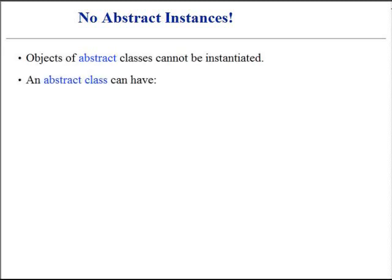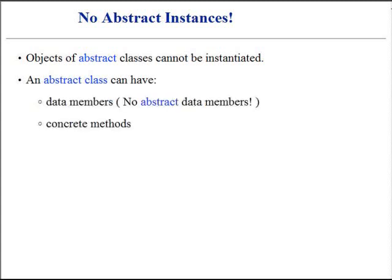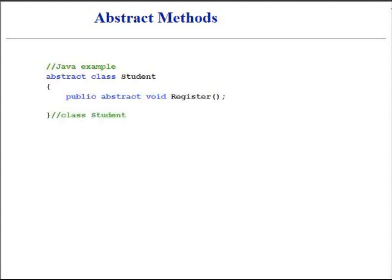Objects of abstract classes cannot be instantiated. Abstract classes can have data members, concrete member methods, and abstract methods at the same time. Abstract method is defined by using the keyword abstract, followed by the data type of the return value, followed by the signature of the method.